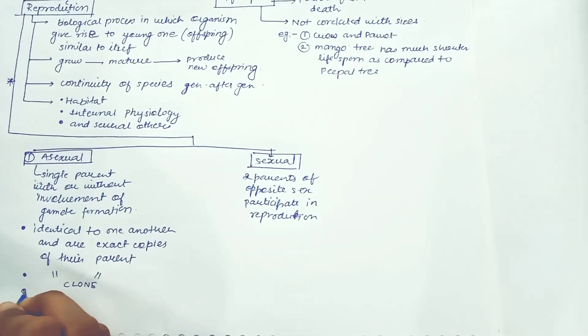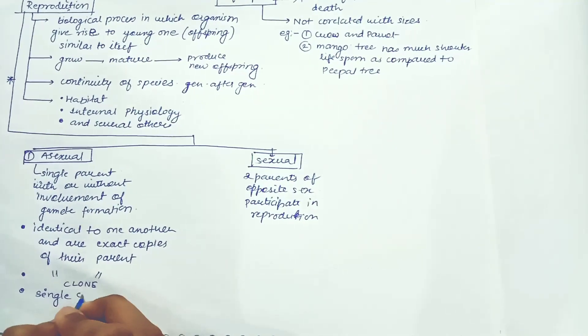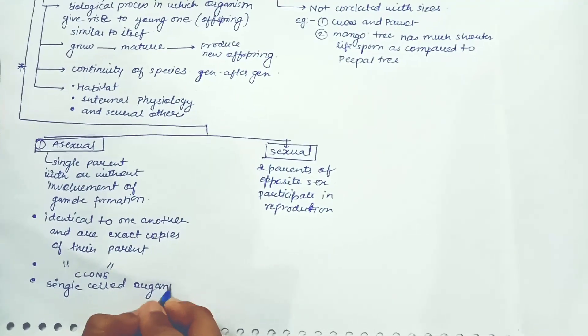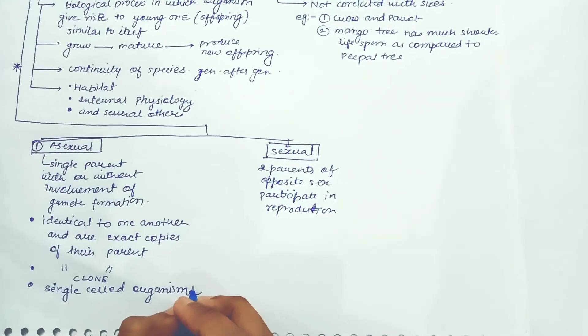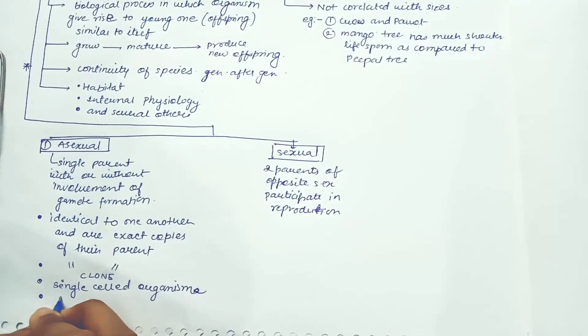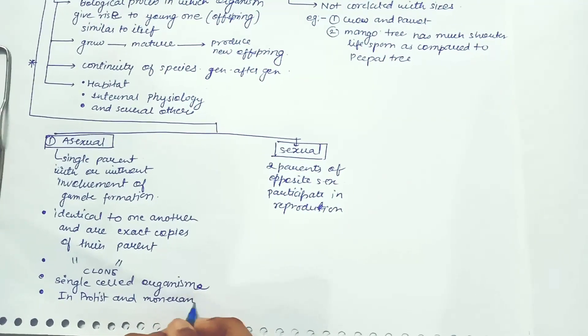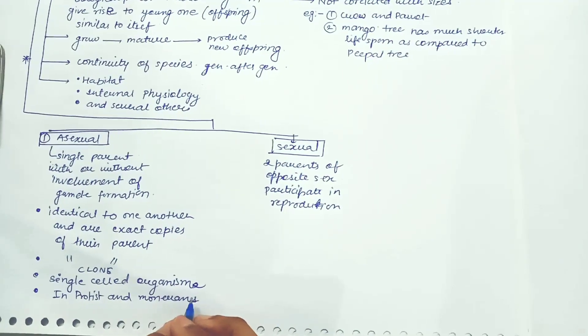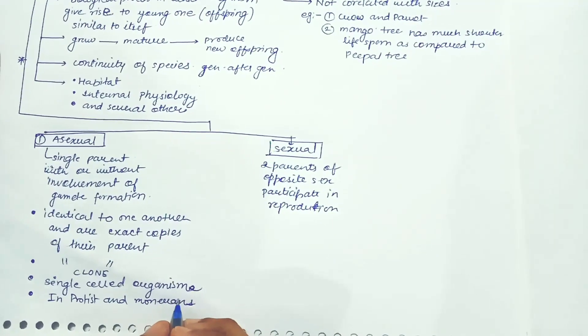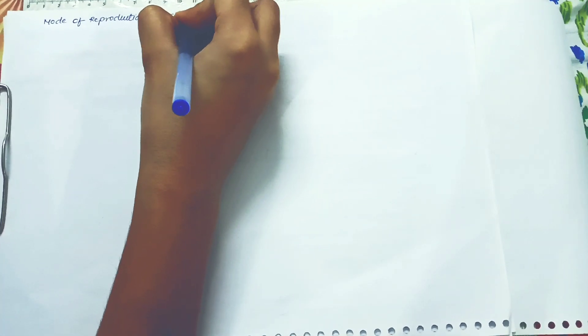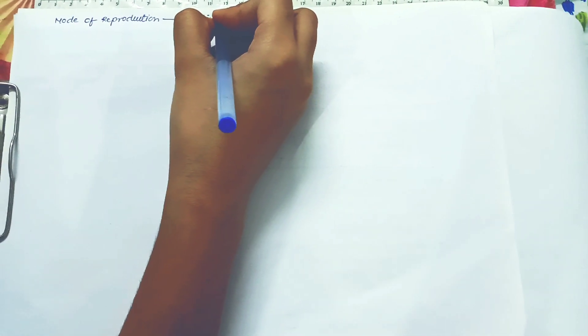So asexual reproduction is common among single cell organisms and plants or animals with simple organization, and in protists and monerans. And the mode of reproduction in them is cell division. So many single cell organisms reproduce by binary fission, which we all know.